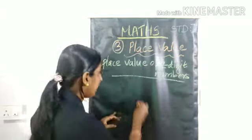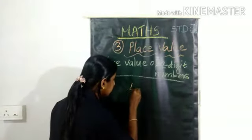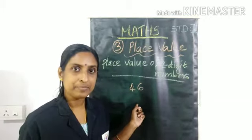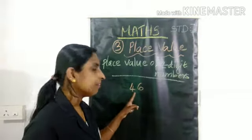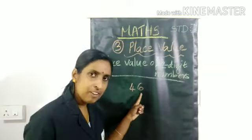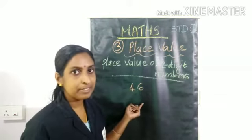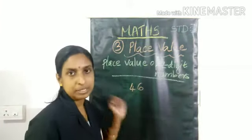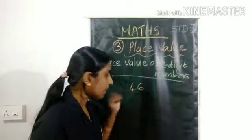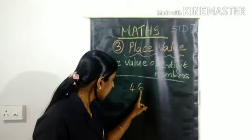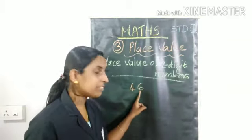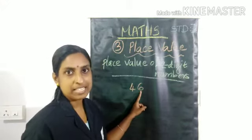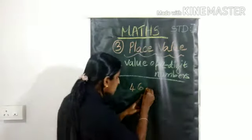Now I will write a number. Read this number. Number 46. Is this a one digit or two digit number? This is a two digit number. Here you can take this number — what is the name of this place? One's place.